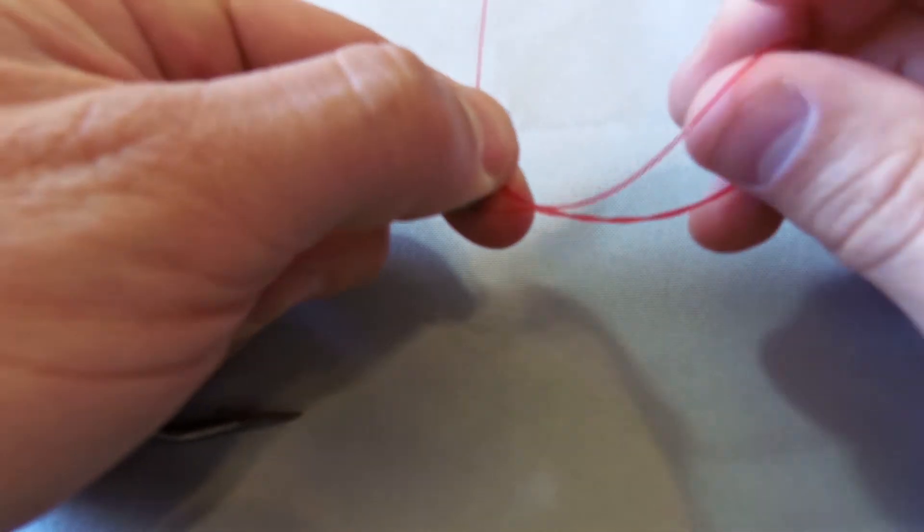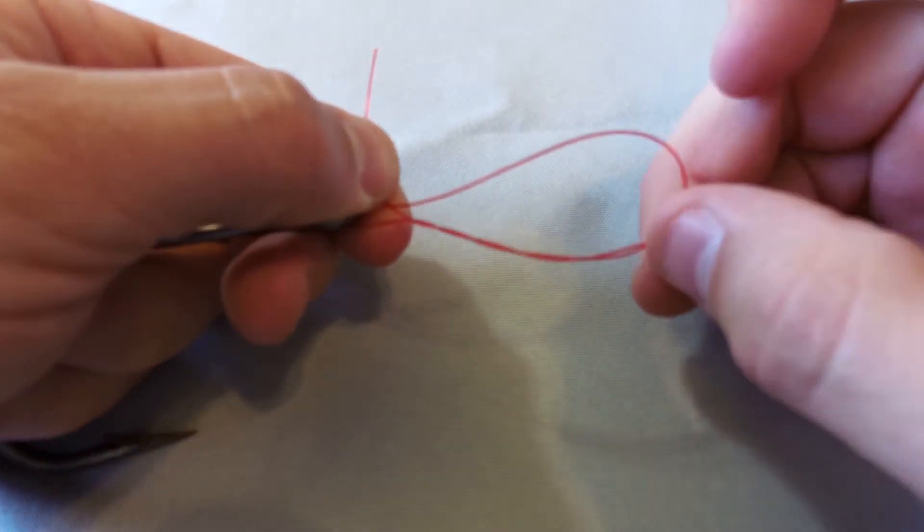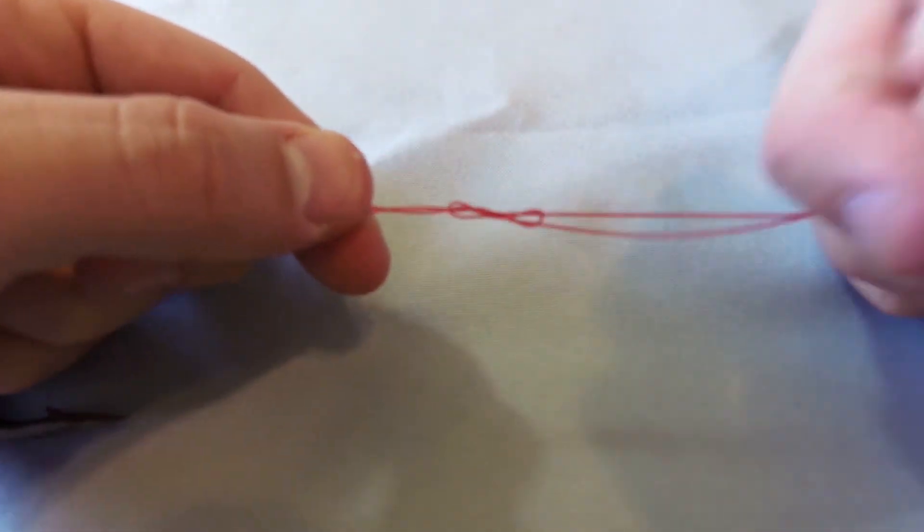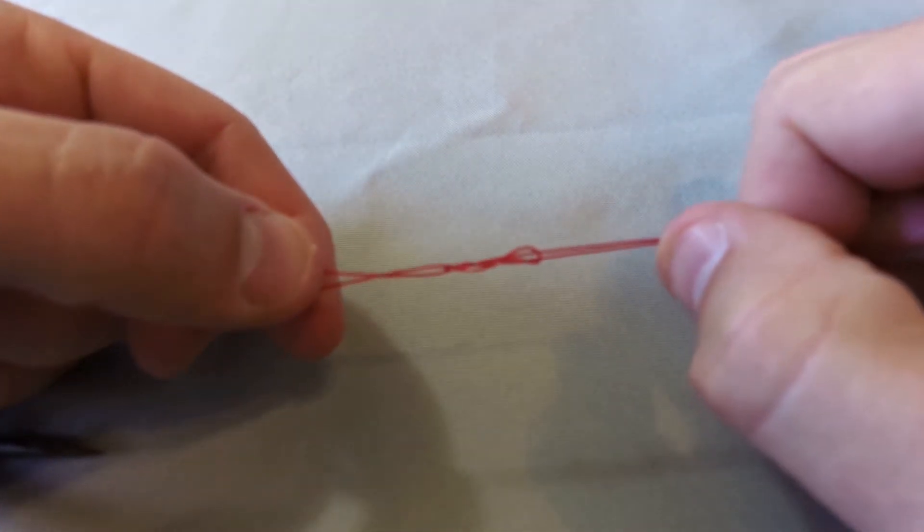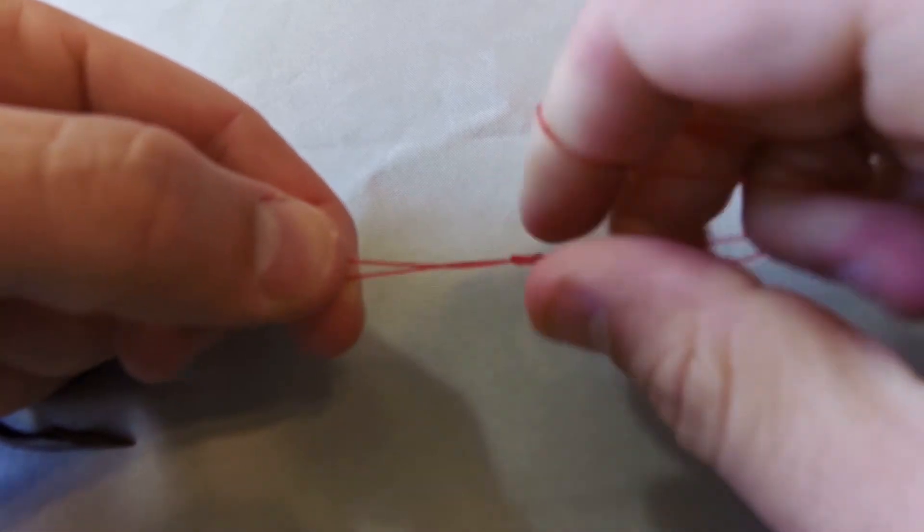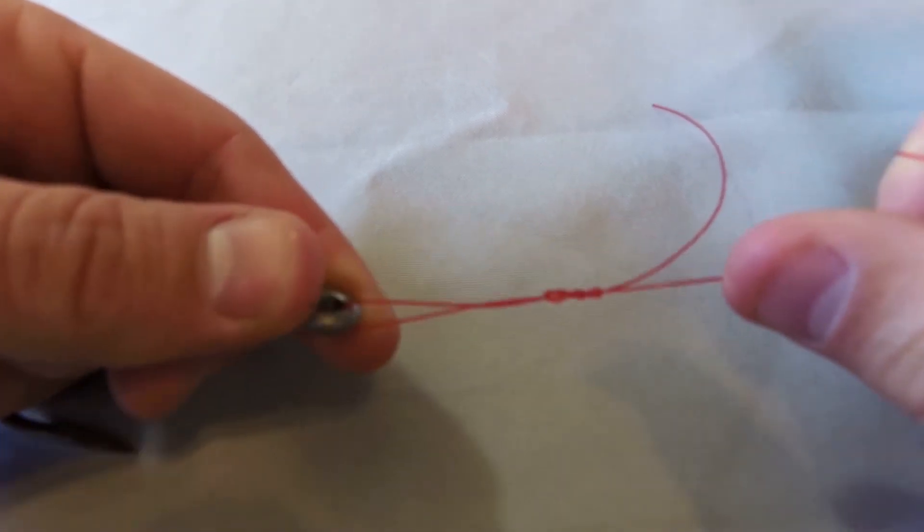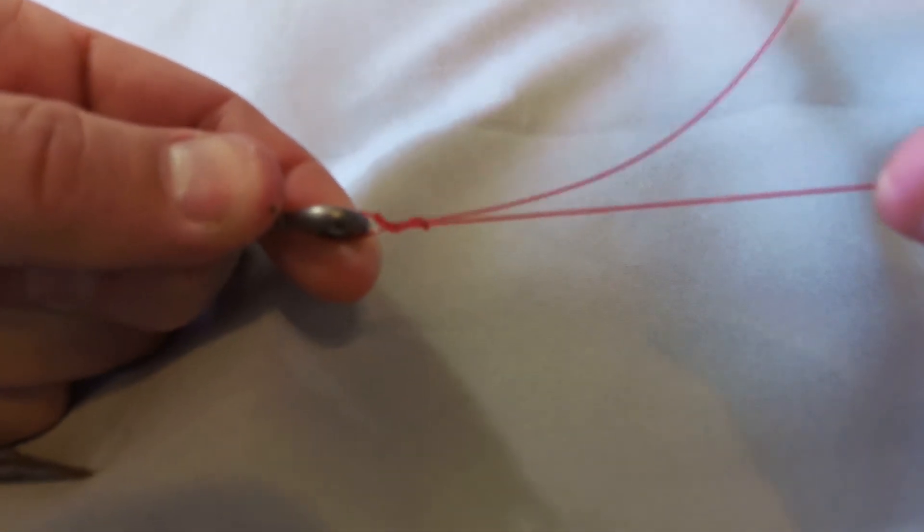Once you do that, you're going to have another loop that was just formed from making that. You're going to bring that through there. At this point, you're going to lubricate that knot, and just pulling on the main line, you're going to cinch it down.